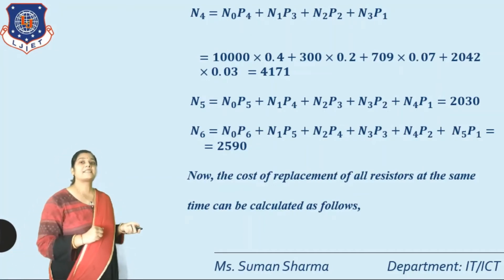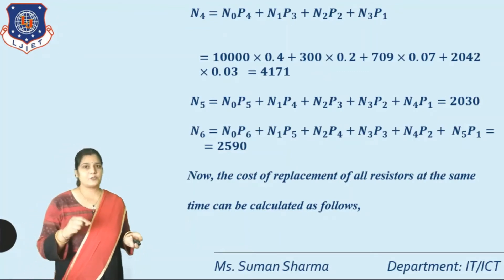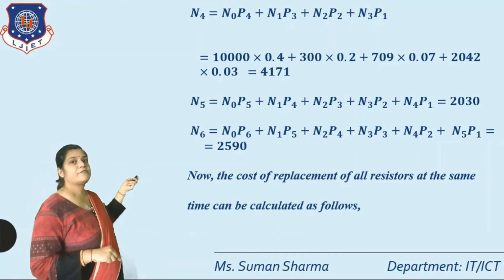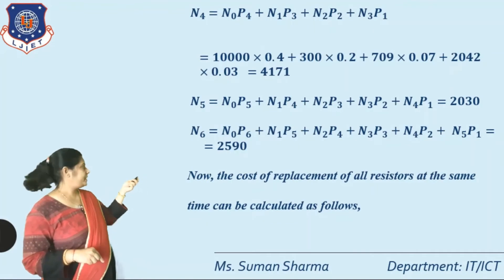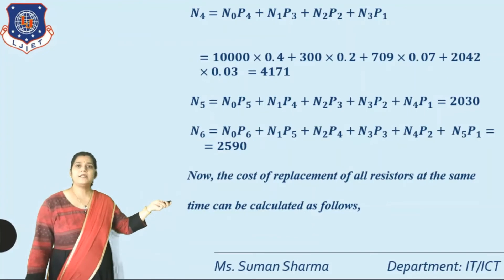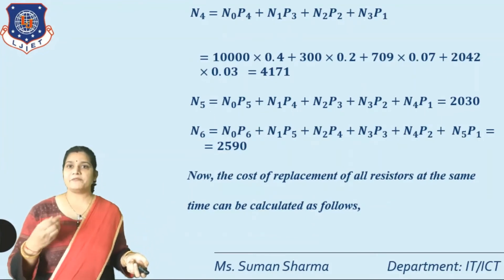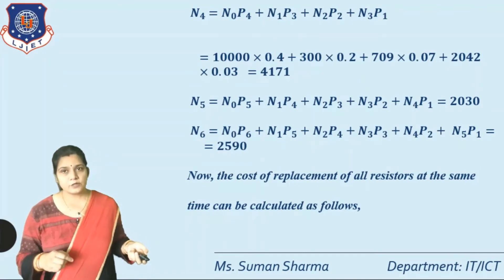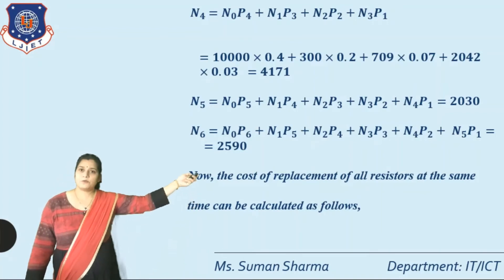N6 = N0×P6 + N1×P5 + N2×P4 + N3×P3 + N4×P2 + N5×P1. Substituting all values gives N6 = 2590.